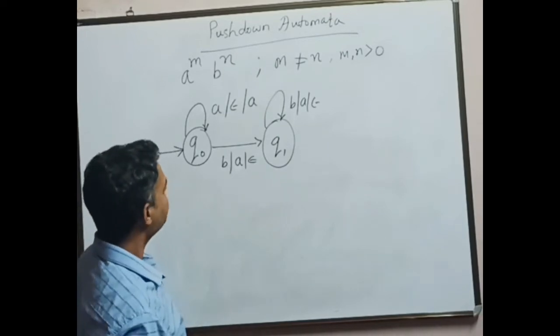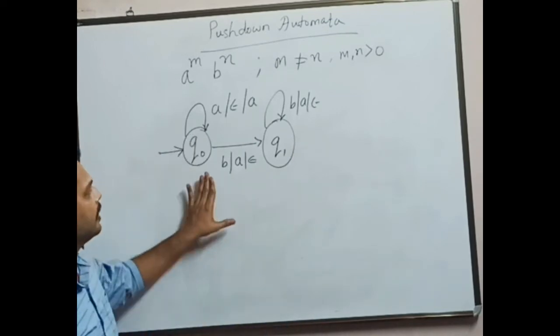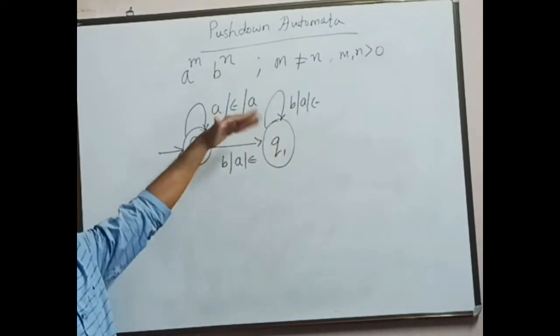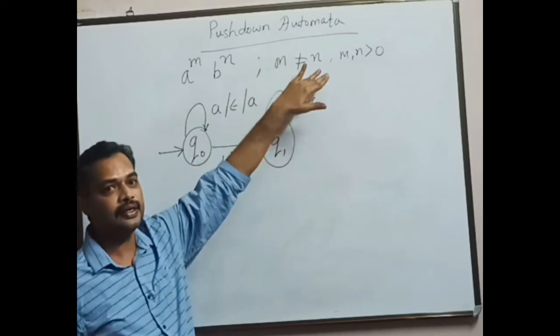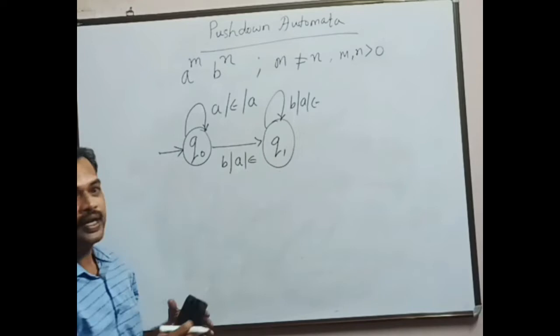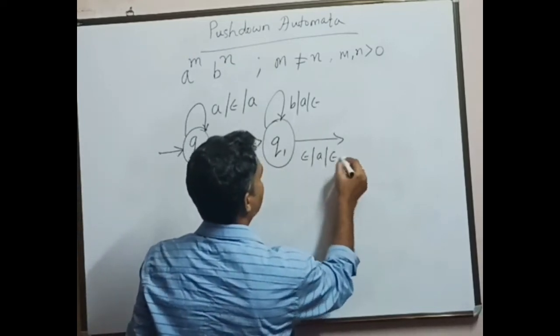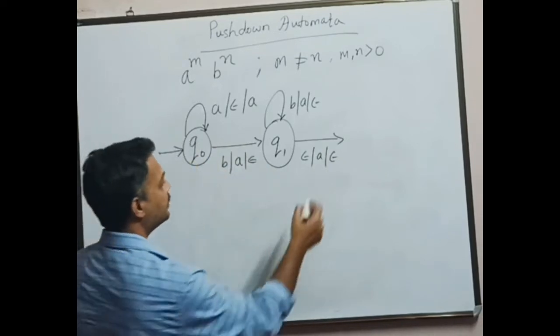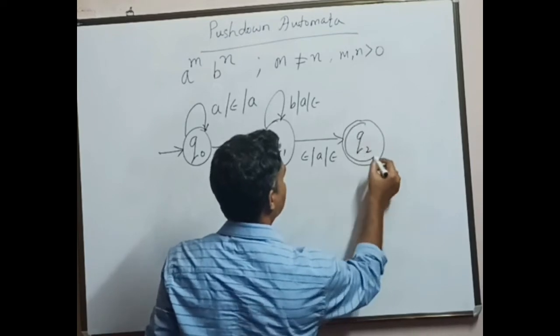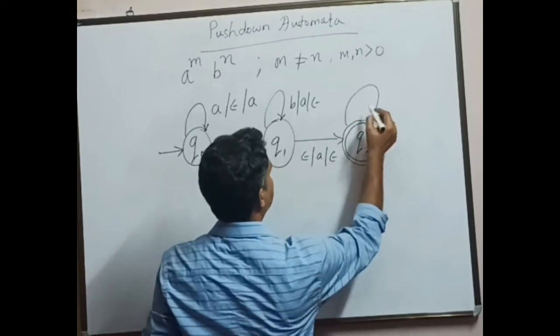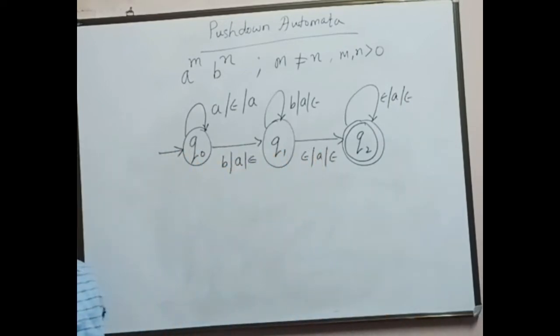Now after this, suppose if there are more number of a's, we are dealing with the first condition, that is m greater than n. If there are more number of a's, let it simply pop a. This time, the PDA moves to the final state with respect to the first condition.